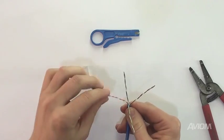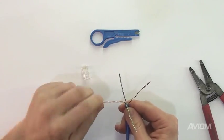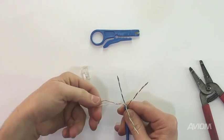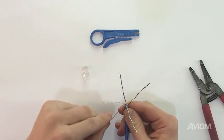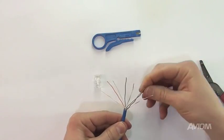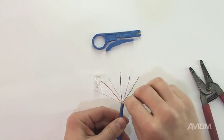Once you have the outer jacket off, separate the pairs of wires into the order that they will be crimped into the connector. As you can see, I am straightening the wires as I untwist them.